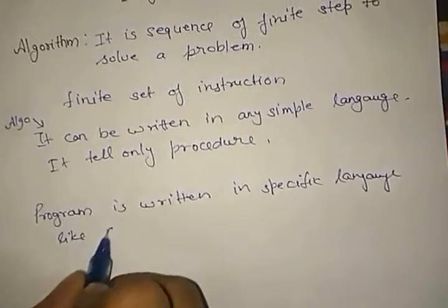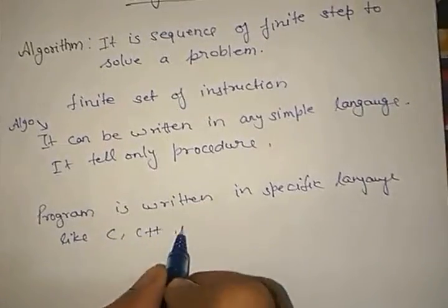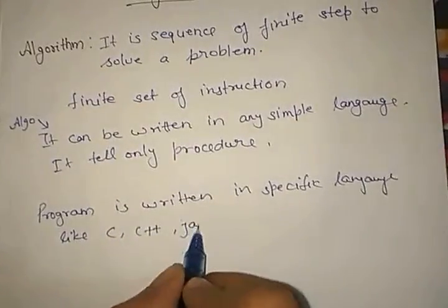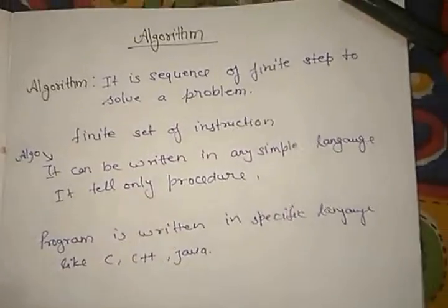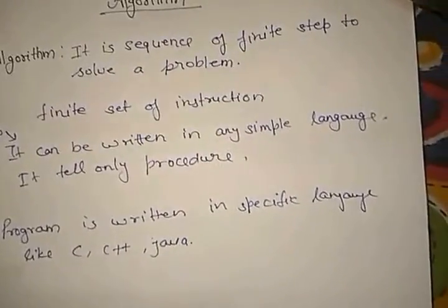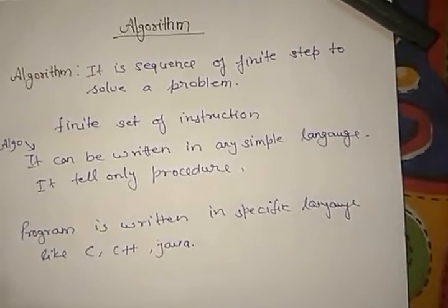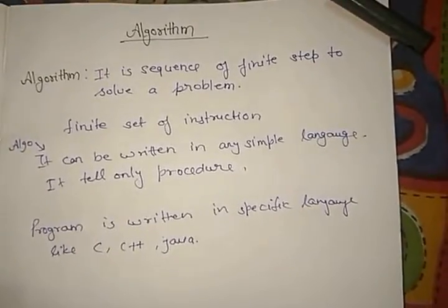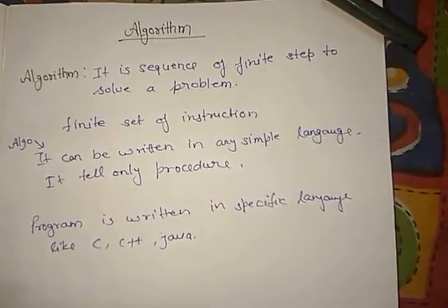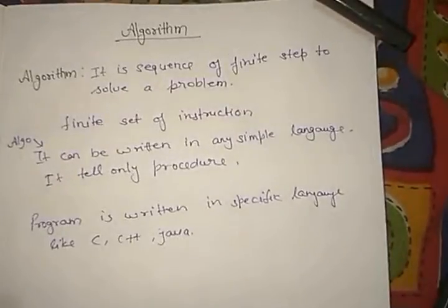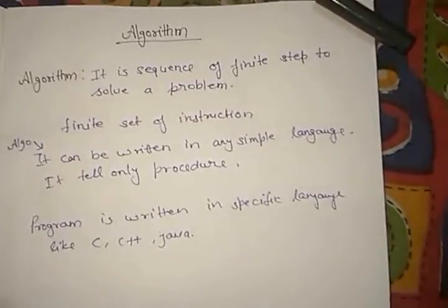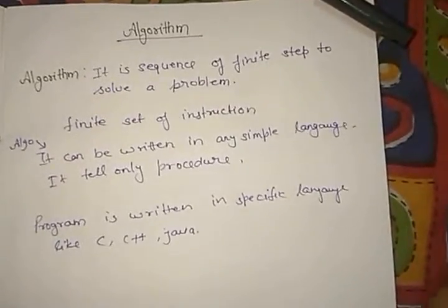A program is written in a specific language like C, C++, or Java. So an algorithm only tells the procedure to write a program. An algorithm is a set of instructions which can be written on paper, but a program is written in a certain specific language such as C, C++, or Java. There are certain criteria to keep in mind when making an algorithm.